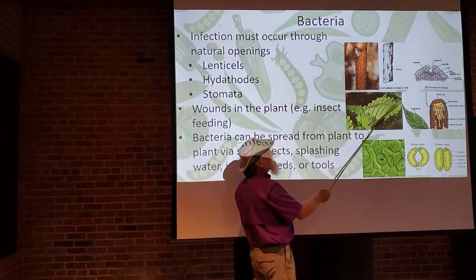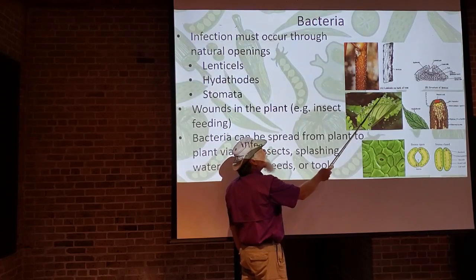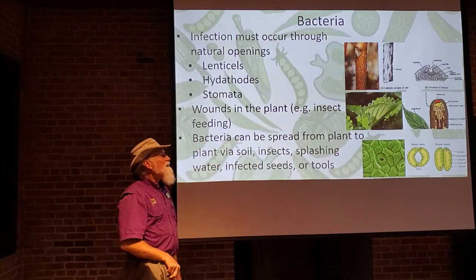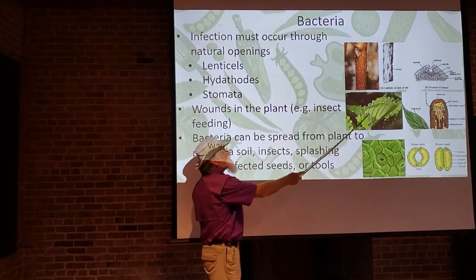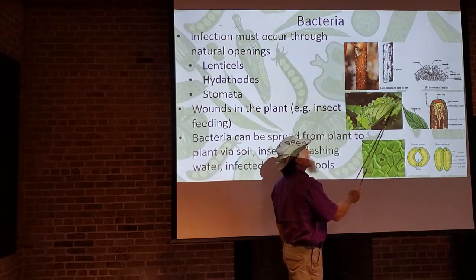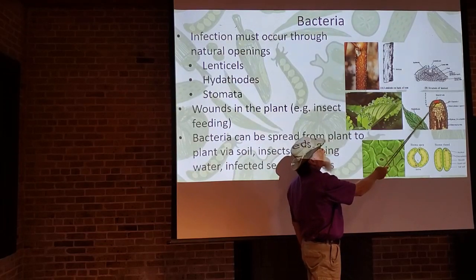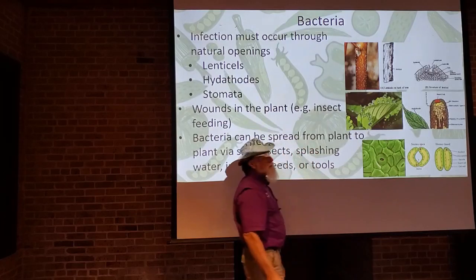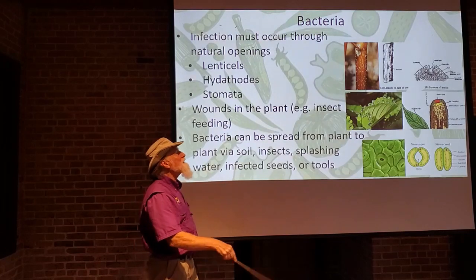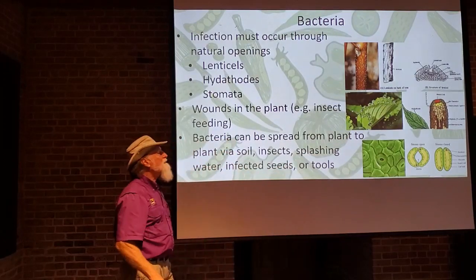There are also hydathodes. Many of us have seen our plants with little droplets of water forming on the edges, especially early morning after rain — those are coming out of the hydathodes, which are always at the leaf margins. It's an opening with a guard cell that opens and closes — one way for the plant to get rid of excess water. That's a natural plant opening where bacteria can enter; bacteria can land in this water droplet and go right down into the plant through the hydathode.